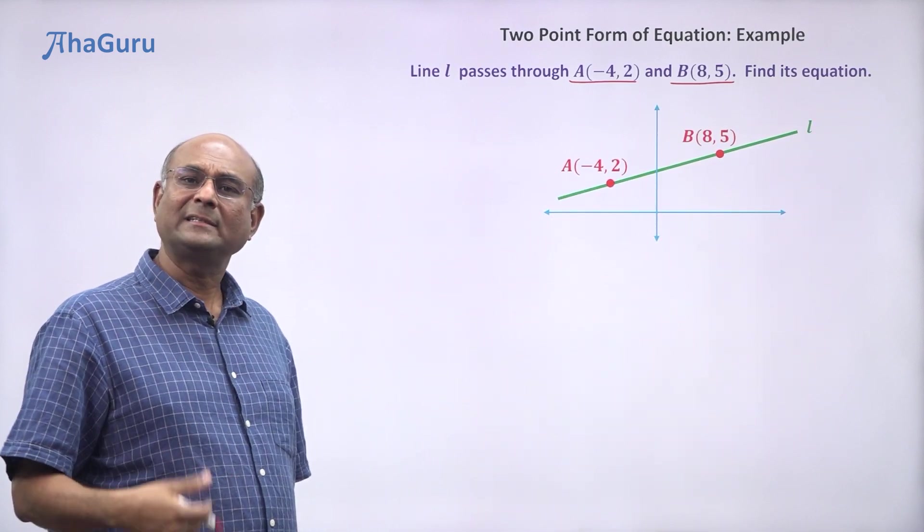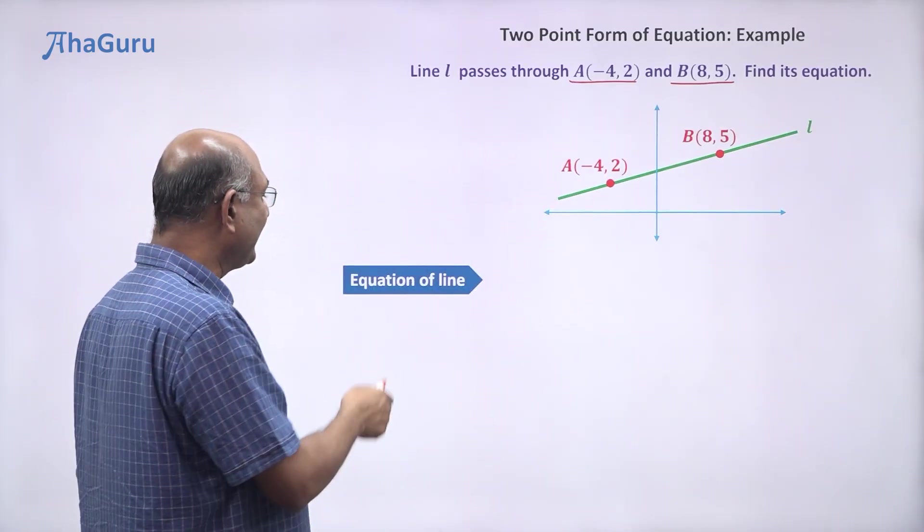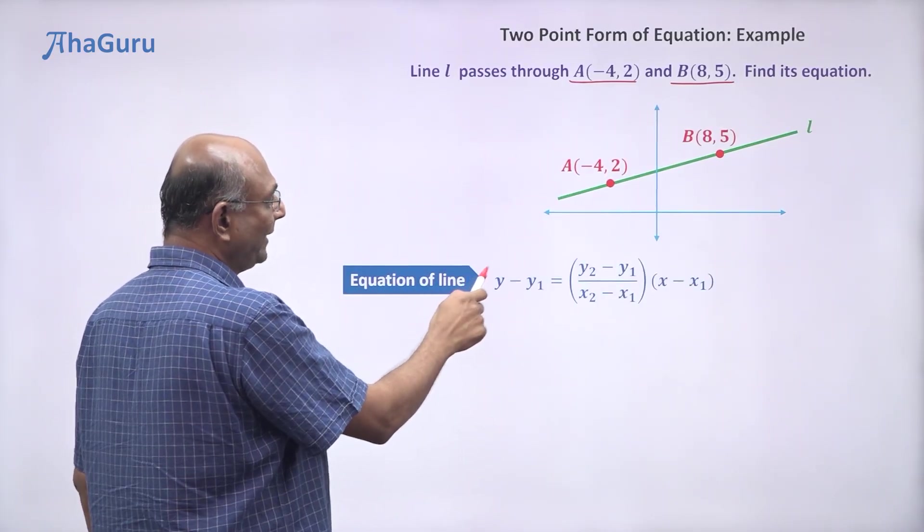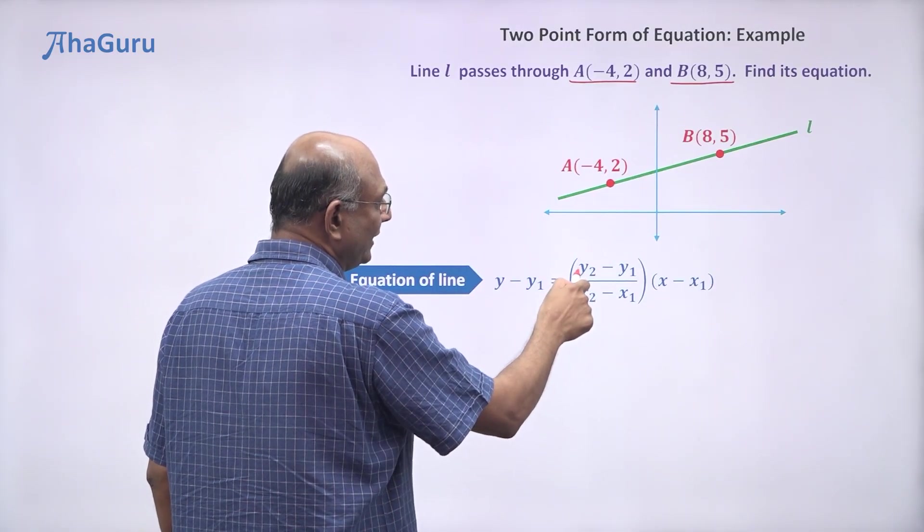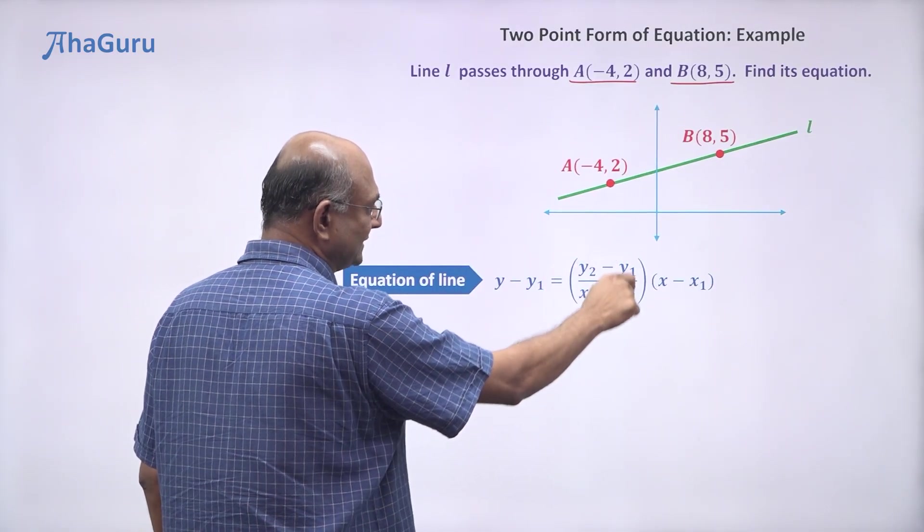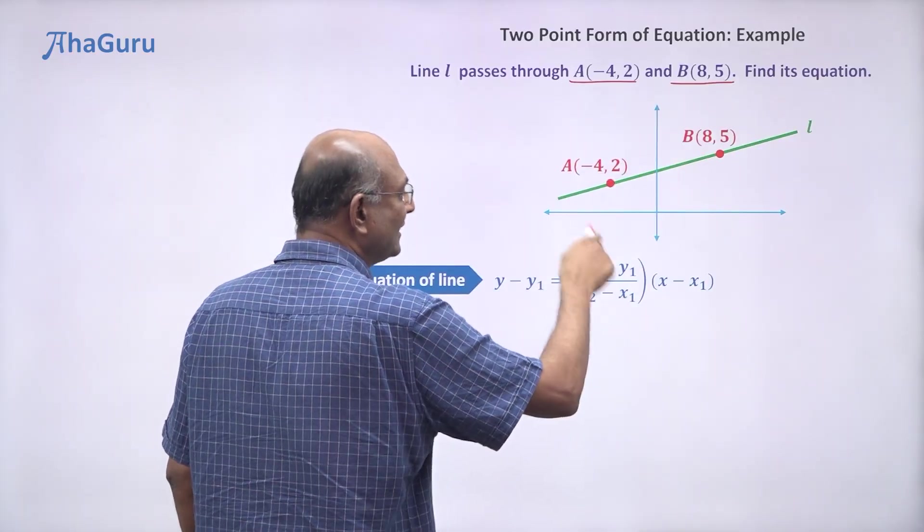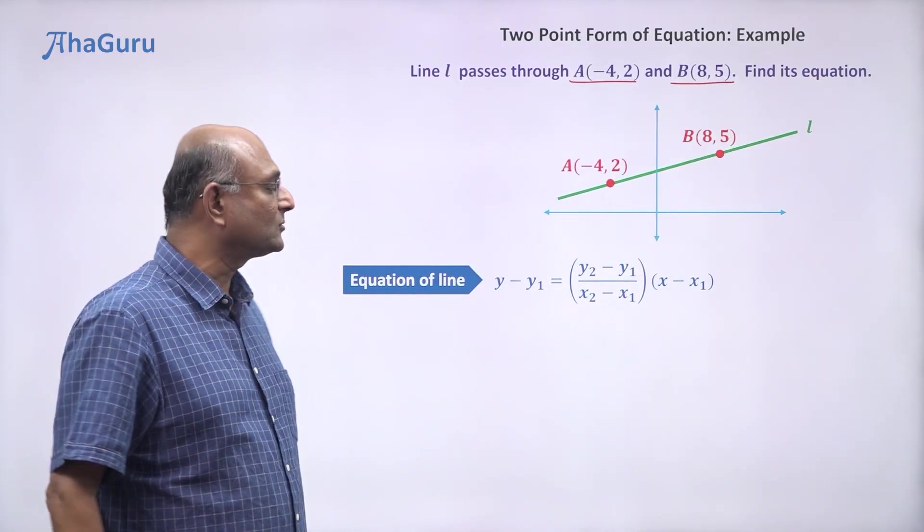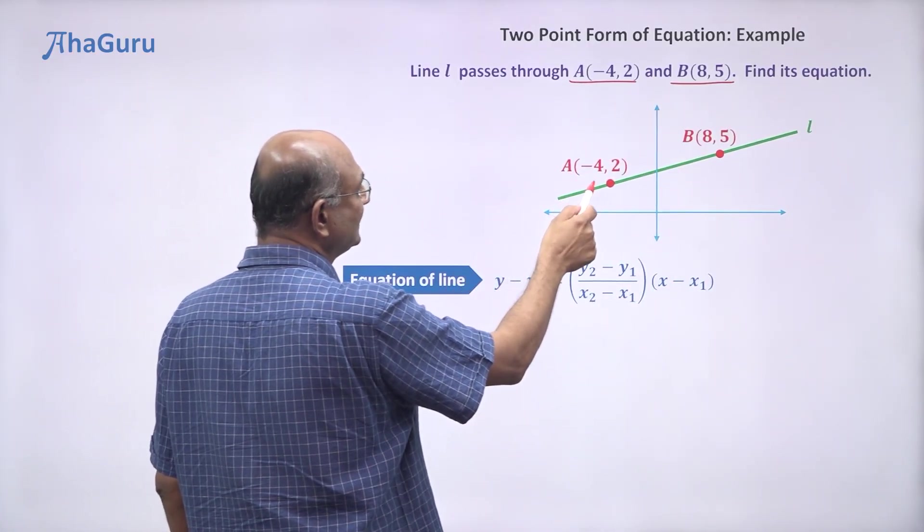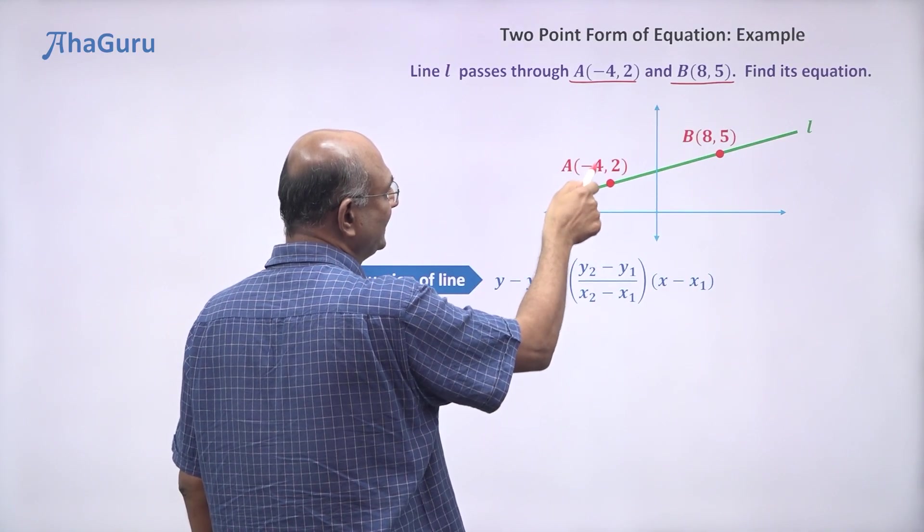How do I find its equation? Well, I have two points, so we can directly write the equation of the line: y - y₁ = [(y₂ - y₁)/(x₂ - x₁)](x - x₁). This is just the slope of this line. Now I'm going to use this as the first coordinate (x₁, y₁), so x₁ is -4, y₁ is 2.